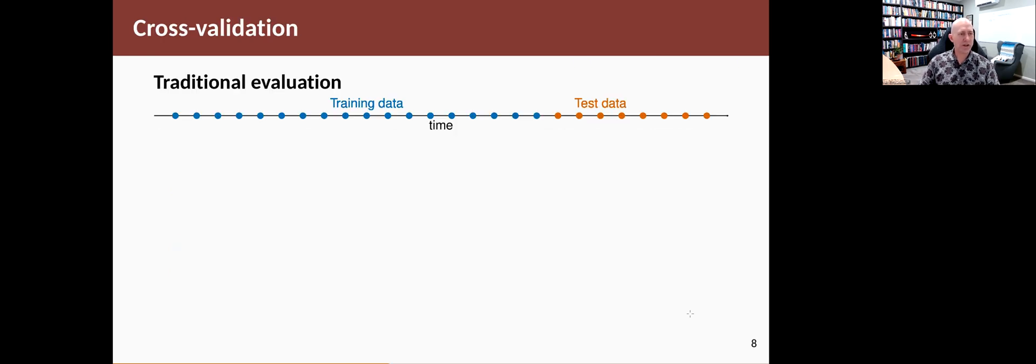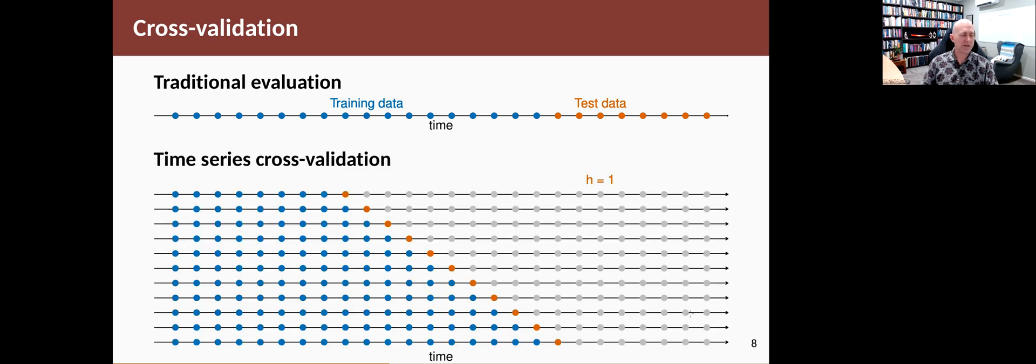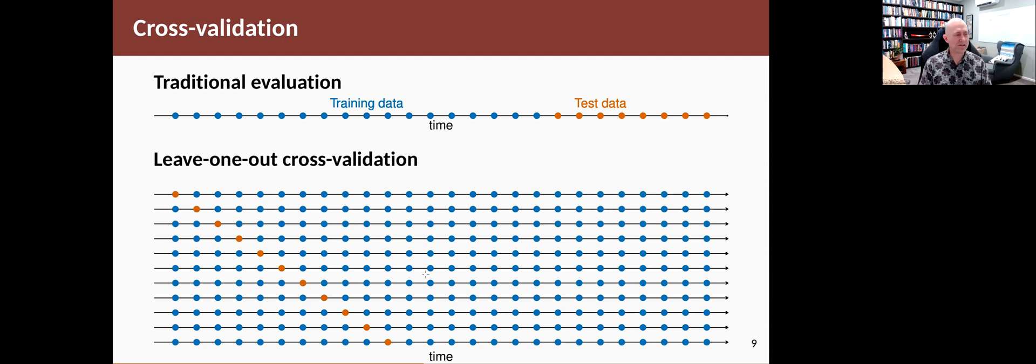So traditionally, if we have a training and a test set, it looks like that. We fit models to the blue data and test on the orange data. Time series cross-validation, we do this, where you fit models to the blue data and you predict the orange data. Leave-one-out cross-validation looks like this, where you fit models to the blue data and you predict the orange data. You're just leaving one out at a time.